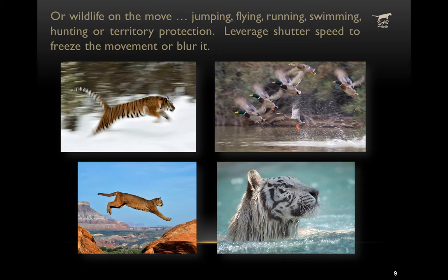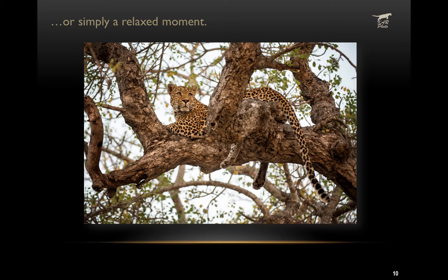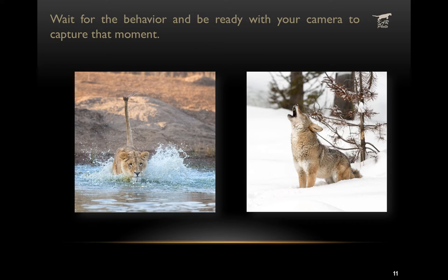It can also be territory protection. You want to leverage the shutter speed to either freeze the movement in the frame or to intentionally blur the movement. You want to wait for the behavior — don't start pressing the shutter button until the behavior begins so that you get multiple shots of the execution of that behavior, whether it's running, jumping, or howling like a coyote.